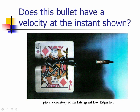But if I were to ask the question differently, if I were to say, suppose this bullet had a magic speedometer, a speedometer right on the side of the bullet. When Doc Edgerton took this picture, would the reading on that speedometer be zero, or would it be some other value?